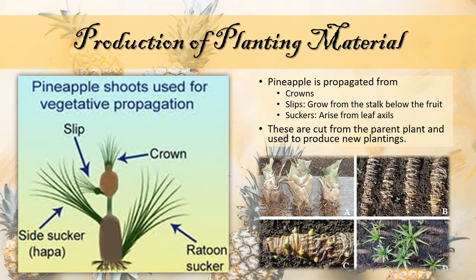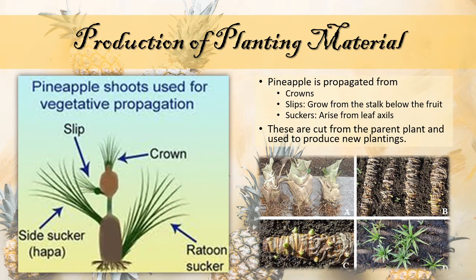Next, the production of planting material. Pineapple is propagated from crowns, as seen in the picture on the left, slips, suckers, and ratoons. Slips and suckers are the most preferred method for commercial growers. Pineapple suckers arise from leaf axils while slips grow from the stalk below the fruit. These are cut from the parent plant and used to produce new plantings. The cuttings are usually cured for a day or two prior to planting by setting them in the shade.